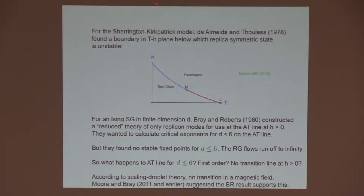They did the renormalization group and found no stable fixed points for dimensions six or less. The RG flows for the couplings run off to infinity. So then the question is, what happens to the Almeida-Thaulis line as a result of this in low dimensions? Does it become a first-order transition? Does it mean there's no transition at all in a magnetic field? In the scaling droplet theory of spin-glass, there is supposed to be no transition in a magnetic field. So one idea is that this Bray-Roberts result actually supports this idea.